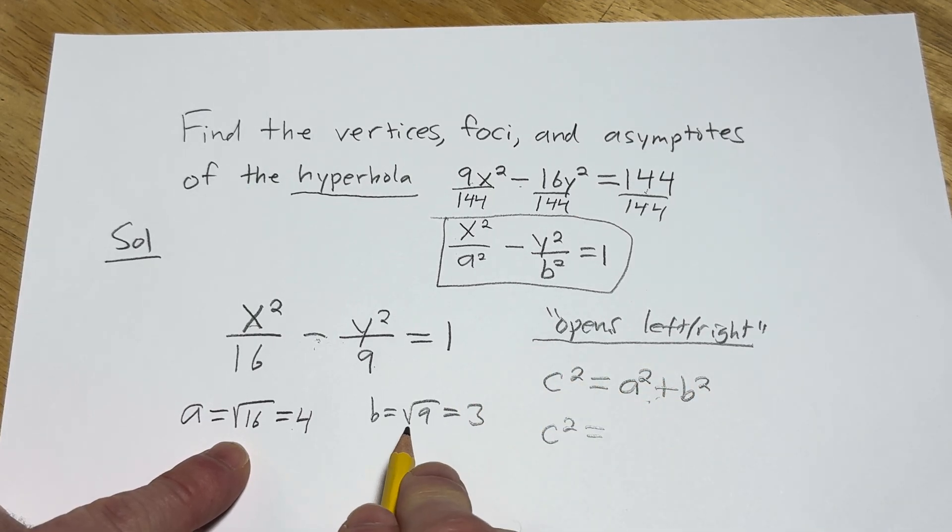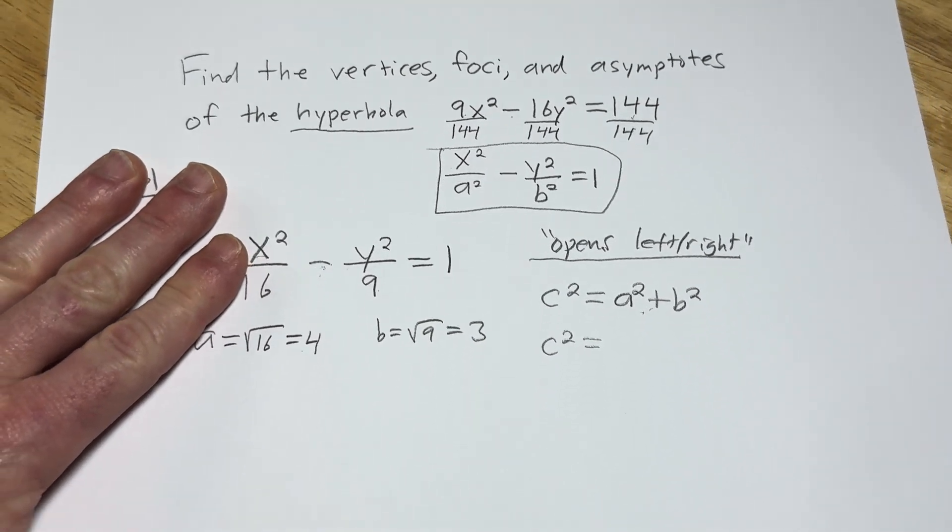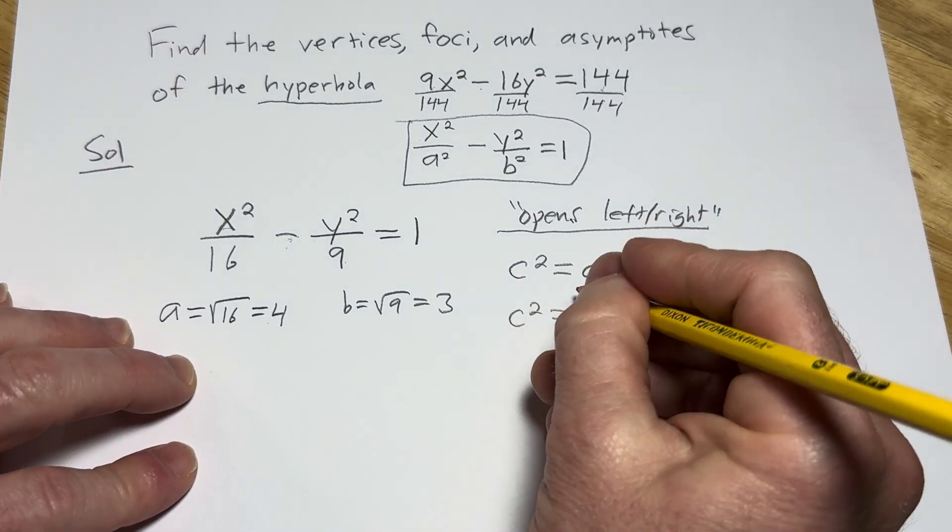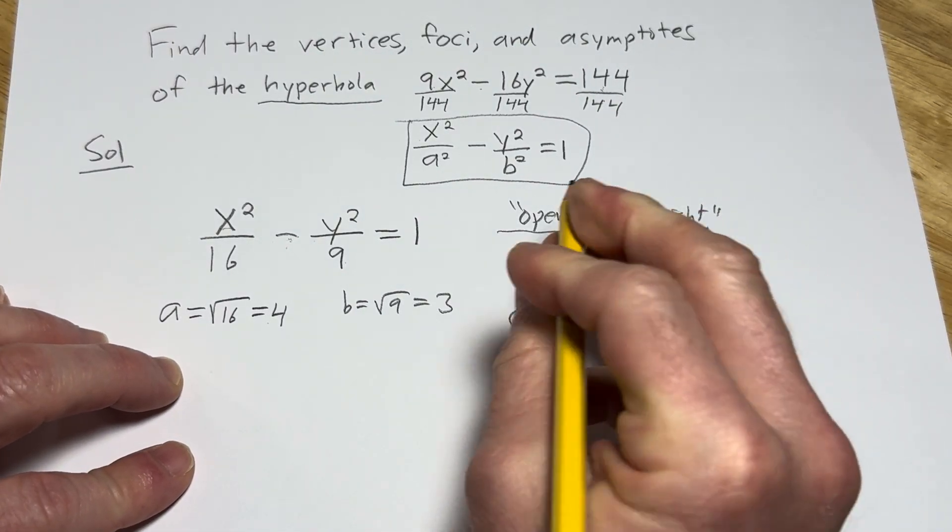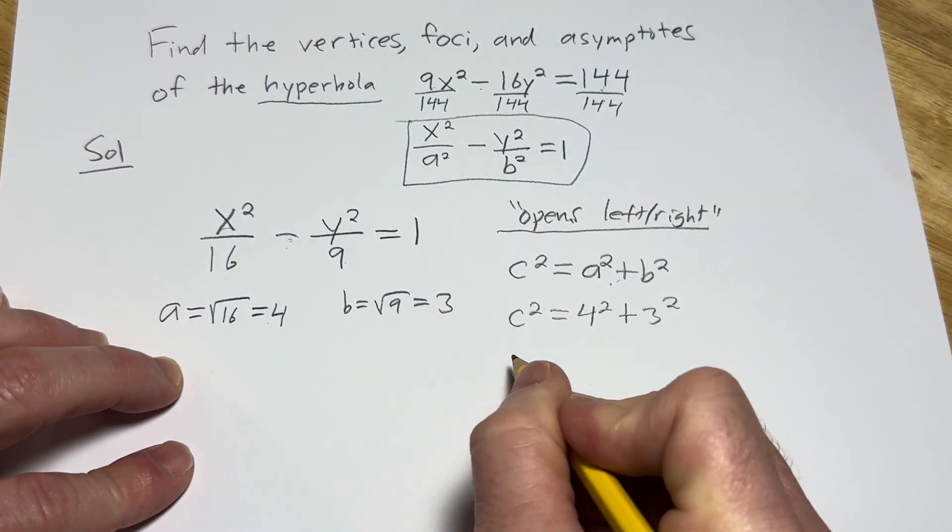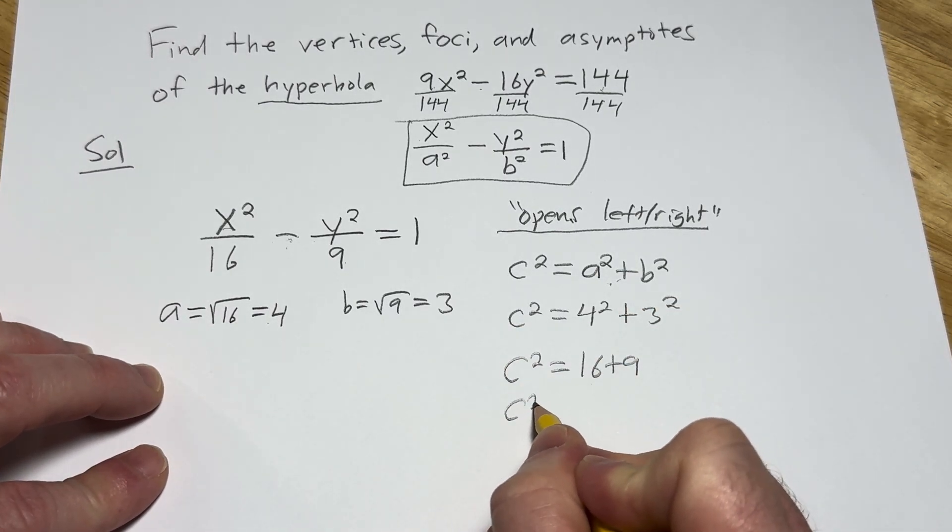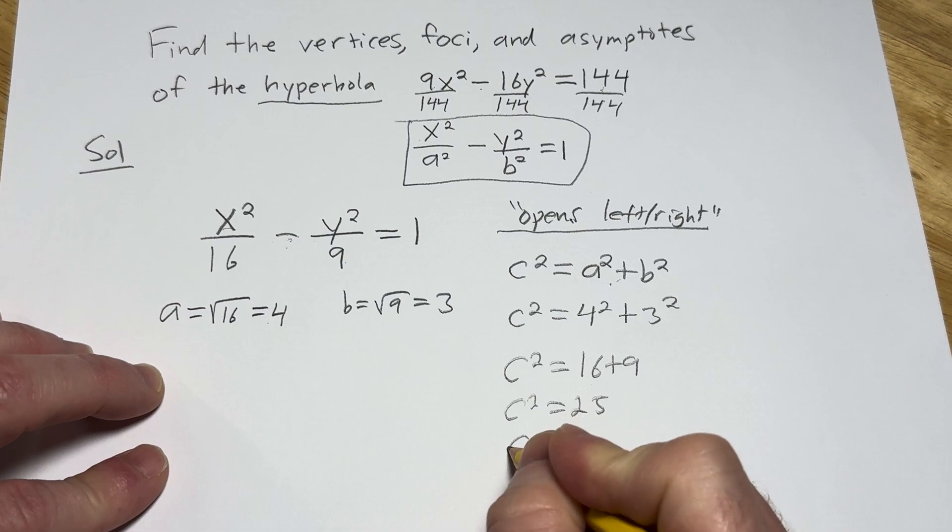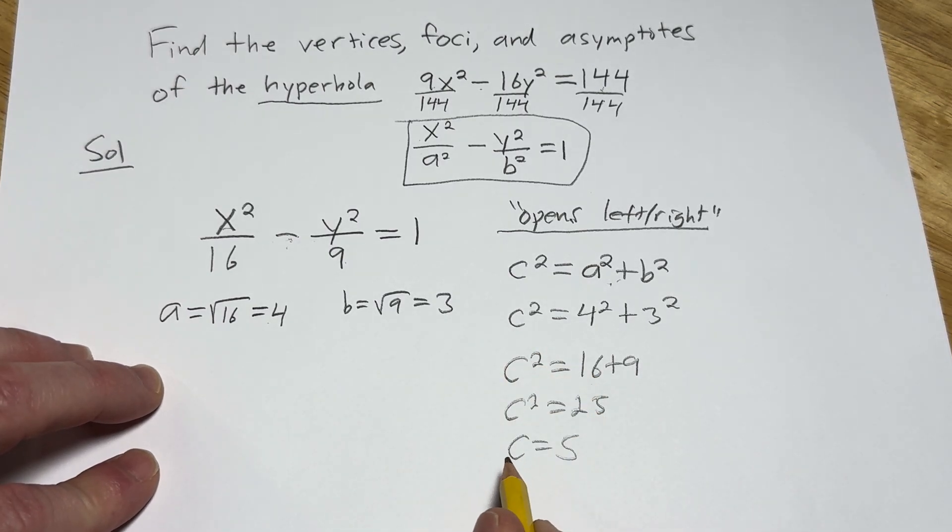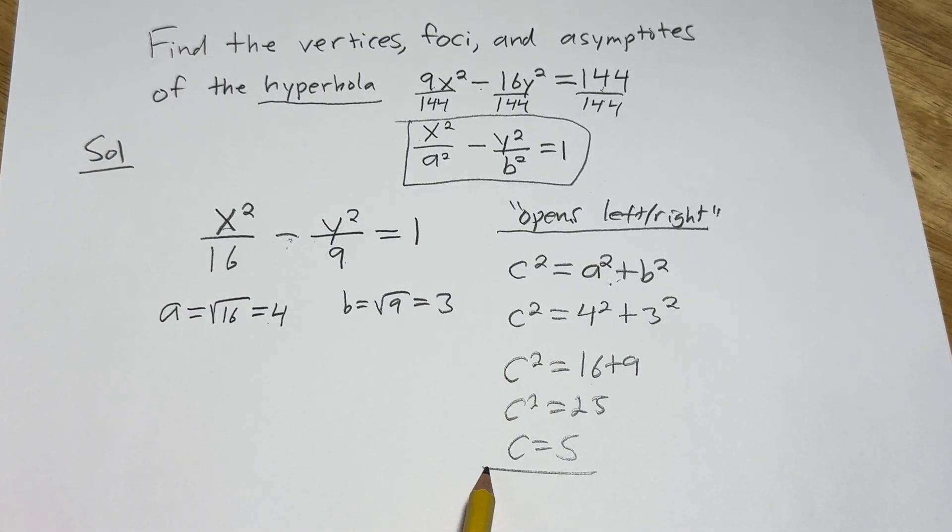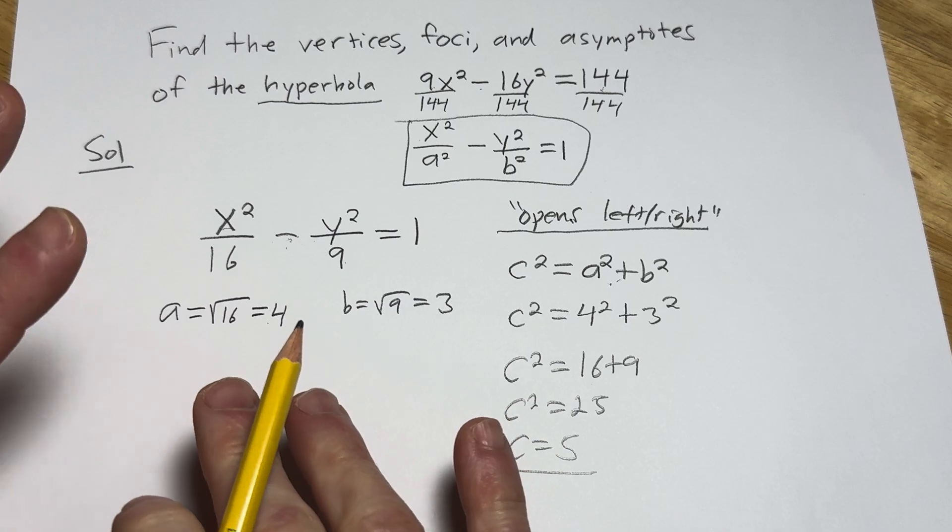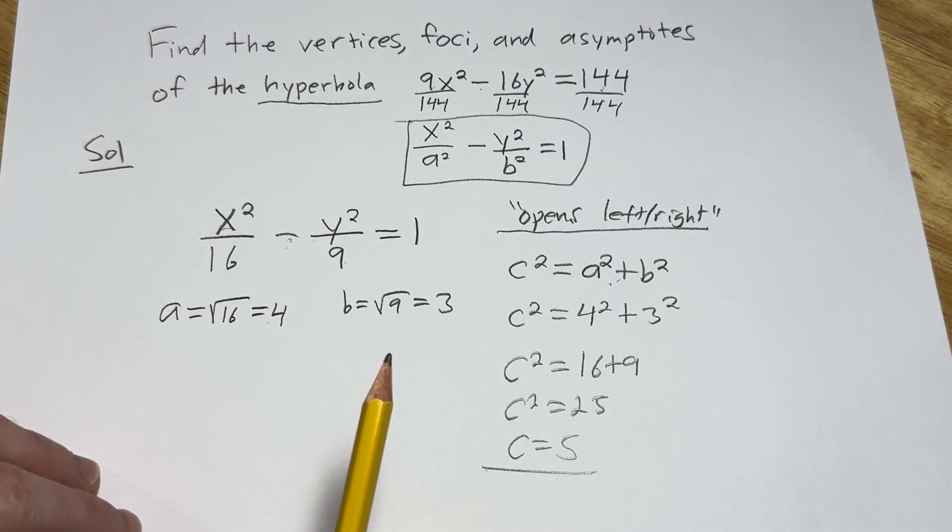Now we can just plug in A and B and solve for C. So C squared is equal to, well, A is 4 so it's going to be 4 squared, and then B is 3 so it's 3 squared. So C squared is equal to 16 plus 9, so C squared is equal to 25. So C is equal to 5, and that's going to be our C. Okay, we're going to use this to find the foci. And I could write down the foci now, but let's just wait.